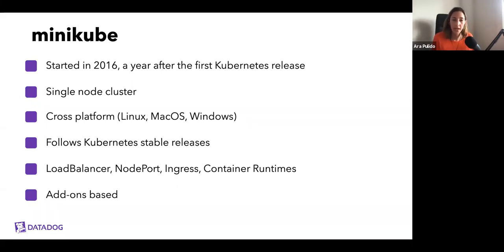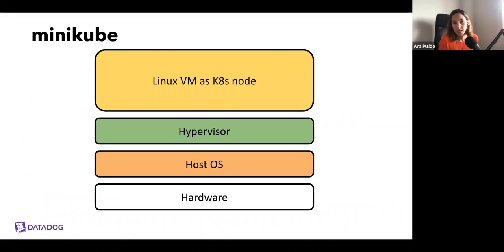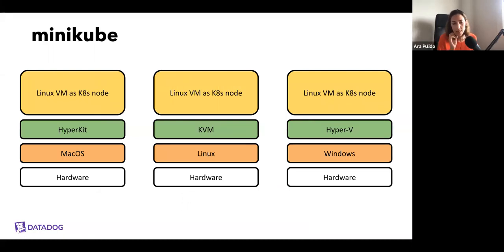Minikube also has an add-ons-based system where you can add more stuff to your cluster, like metrics server or ingress. From an architectural point of view, you have your hardware layer, your workstation OS, then a hypervisor, and then your node running as a Linux VM — that node acts as both the control plane and the worker node. Across the three operating systems, it looks exactly the same; the only thing that changes is the hypervisor — HyperKit on macOS by default, KVM on Linux, and Hyper-V on Windows.